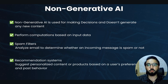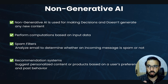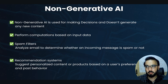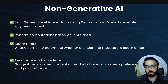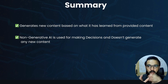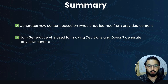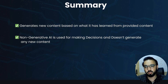Another example could be recommendation systems. When you go to an e-commerce site and purchase something — say a cosmetics product — the recommendation engine, which is a non-generative AI model, will recommend more relevant products. It suggests personalized content or products based on user preferences and past behavior. So generative AI takes input and generates new output, while non-generative AI takes input and makes decisions.